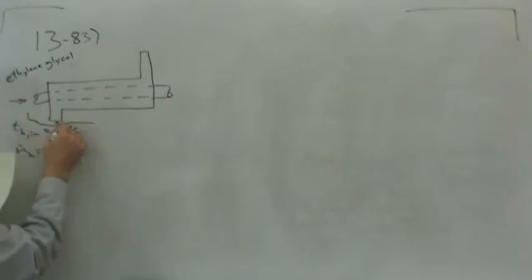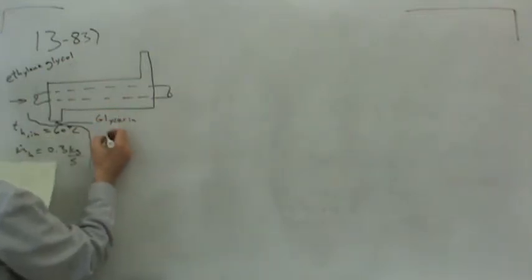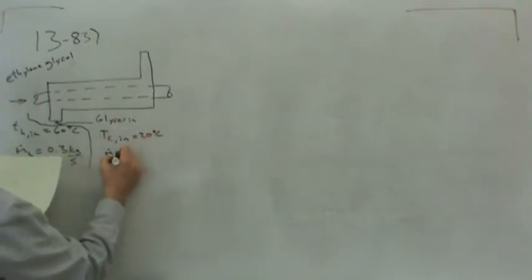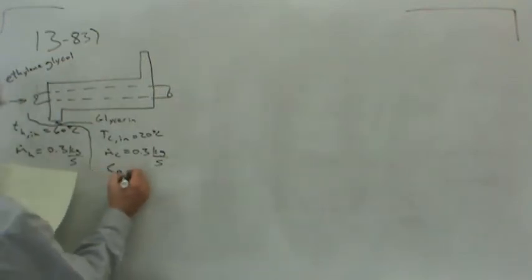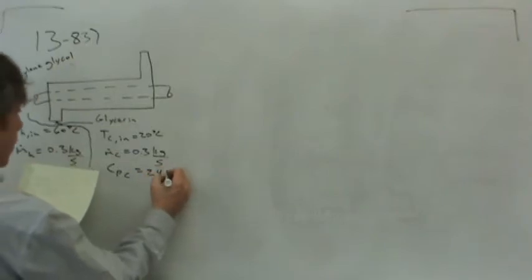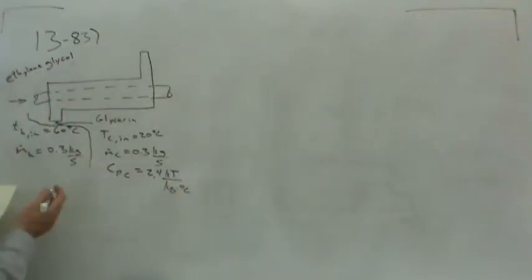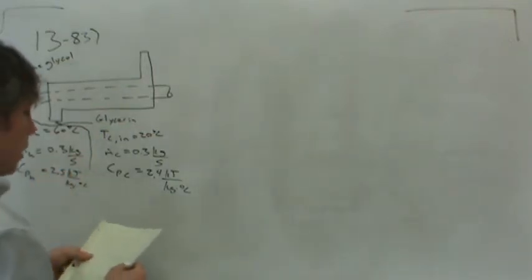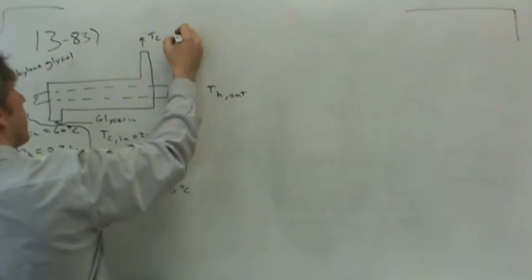There's another fluid that flows in — it's glycerin — that flows in at a temperature of 20 degrees Celsius, the cold stream inlet, with a mass flow rate on the cold side of the same 0.3 kilograms per second. The heat capacity on the cold side is 2.4 kilojoules per kilogram per degree Celsius, and the heat capacity on the hot side is 2.5 kilojoules per kilogram per degree Celsius.